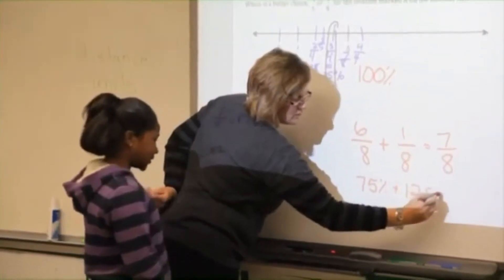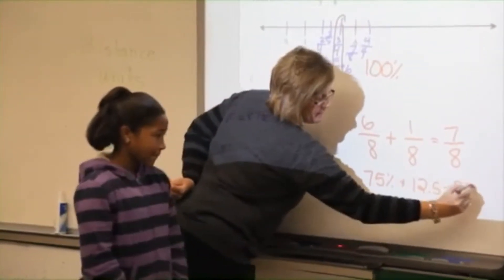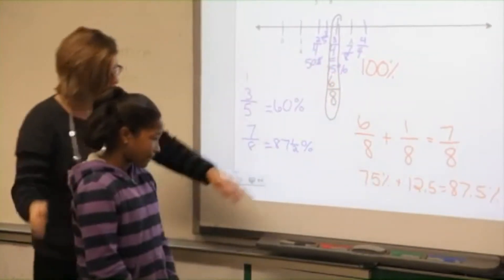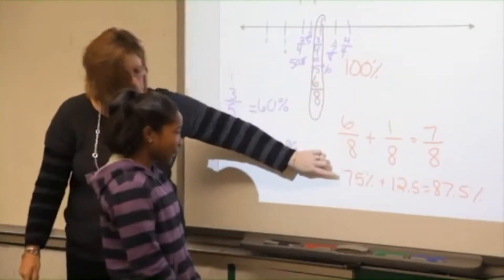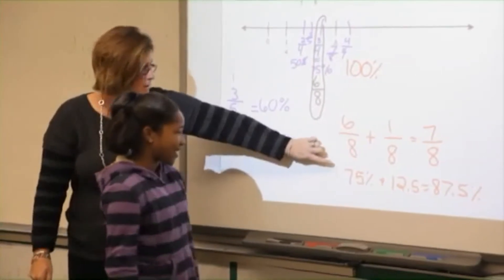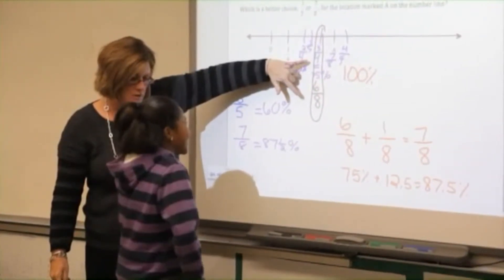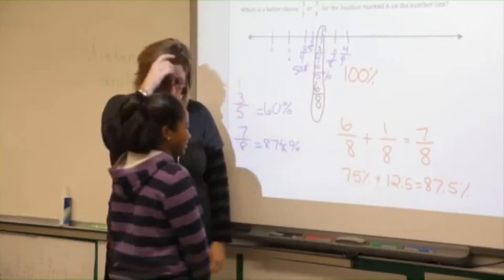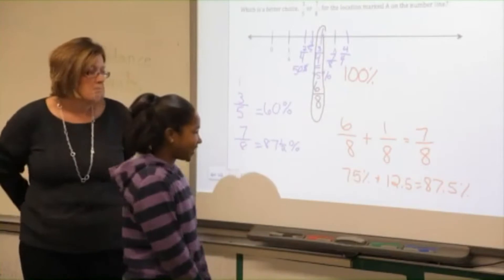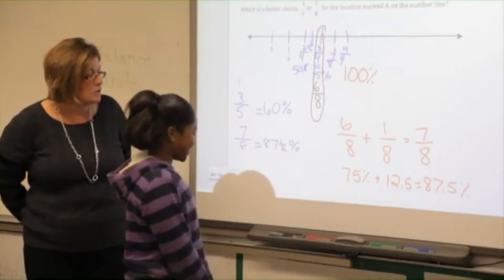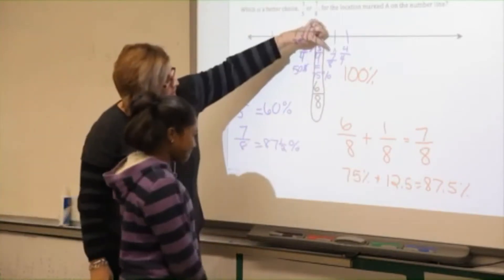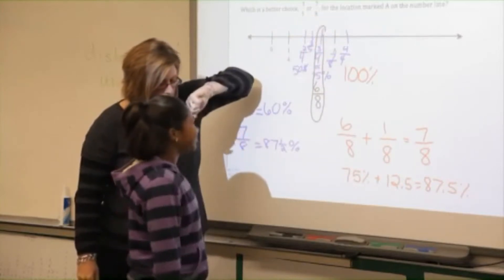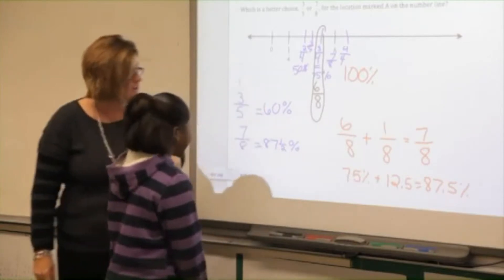So would you say it looked a little like this? Seanna, is that what you did — you took the 6 eighths and you found 75%? Which you knew because these two are equivalent fractions, and you knew 1 eighth was 12 and a half percent. Excellent. You added those together, so you knew this would have to be 7 eighths. Thumbs up if you're in agreement that A is 7 eighths.